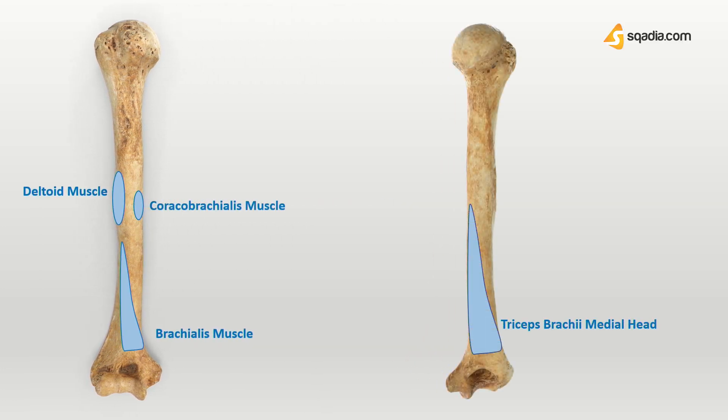The triceps brachii muscle is attached via its medial head to the posterior surface, and the lateral head is attached to the ridge in the proximal third.